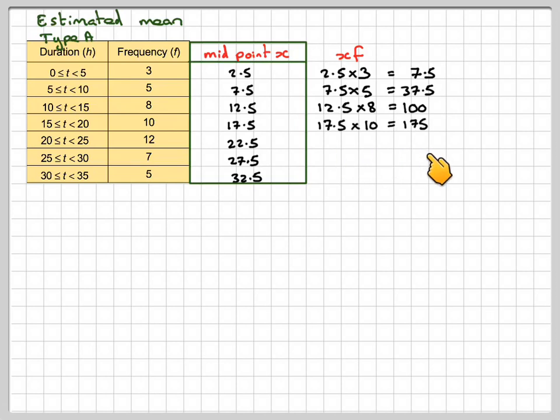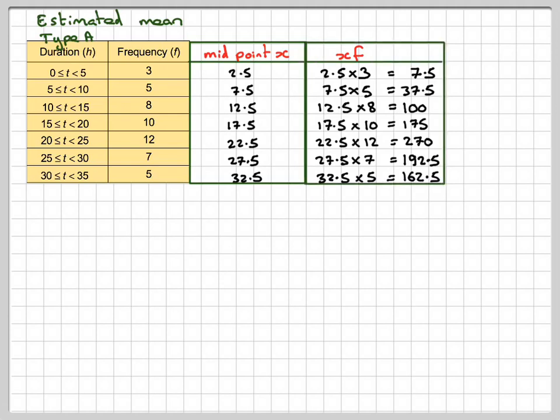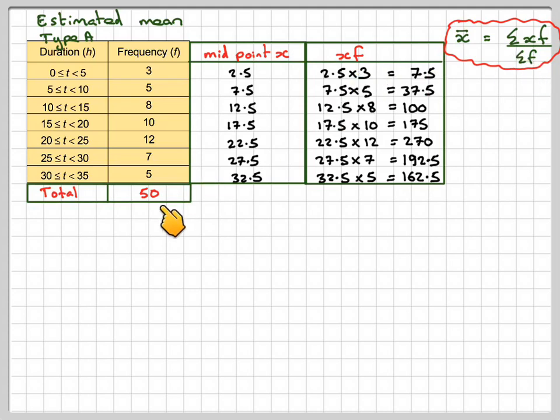17.5 times 10, which is 175. 22.5 times 12, which is 270, and so on. For the mean for a frequency distribution, we need to add up all the xf's and divide by the total frequency. This total comes to 945, so the mean for the first set of data is going to be 945 divided by 50, which is 18.9 hours.